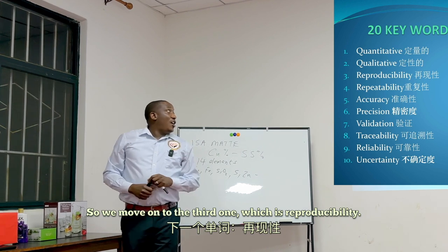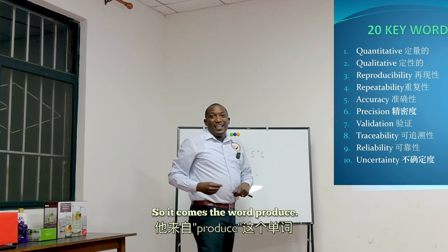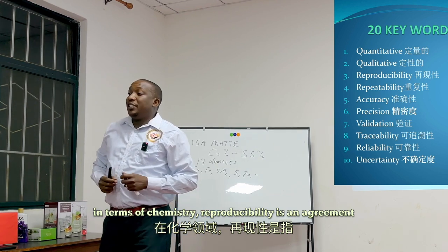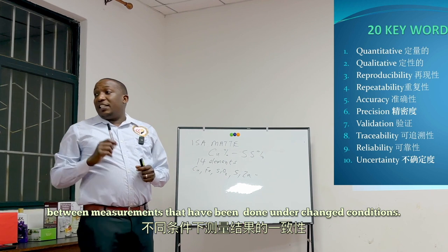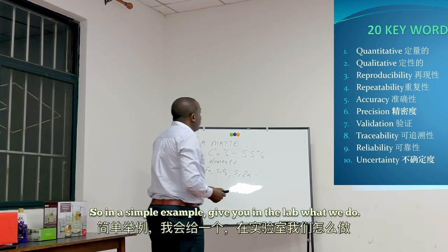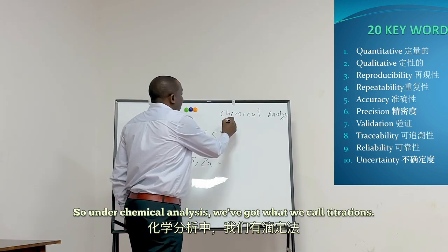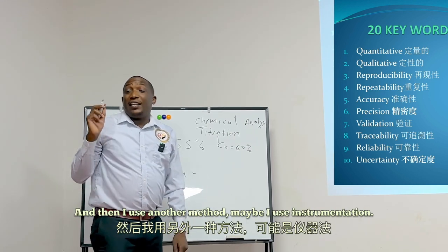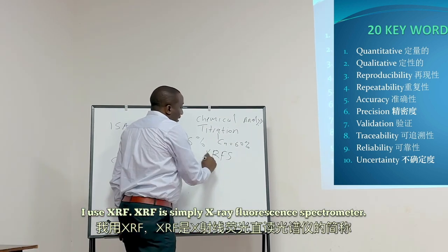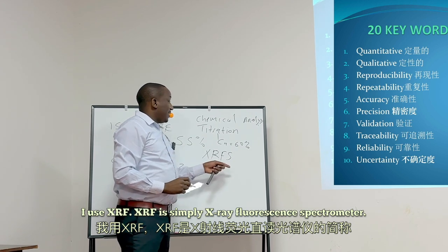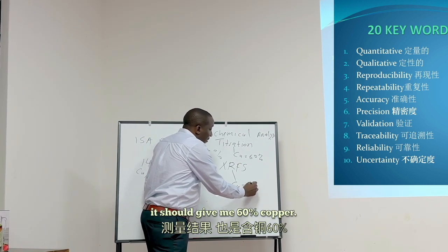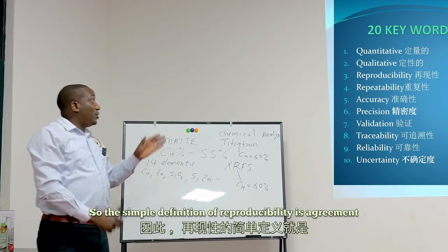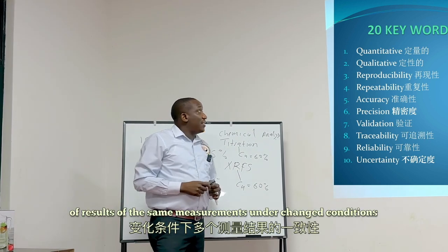The third word is reproducibility. In terms of chemistry, reproducibility is an agreement between measurements that have been done under changed conditions. For example, if I do a titration and get a copper result of 60%, then I use another method — say XRF, which is X-ray fluorescence spectrometry — and the machine analysis of the same sample also gives 60% copper, then we say that result has reproducibility. The simple definition: agreement of results of the same measurements under changed conditions.